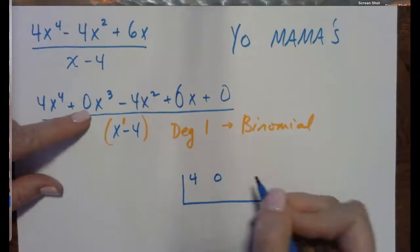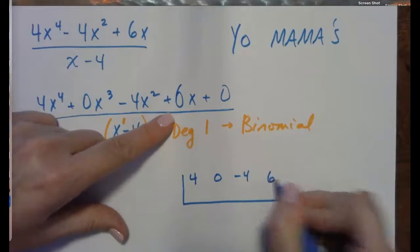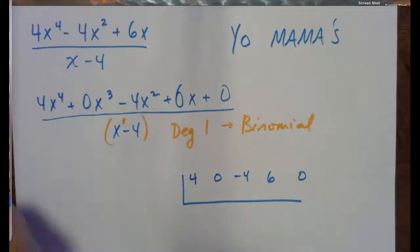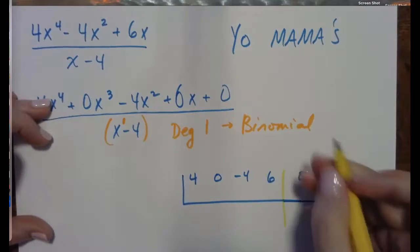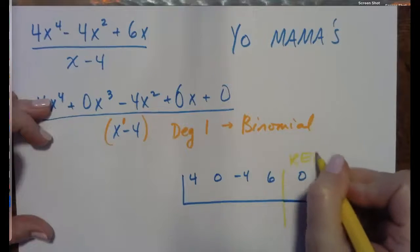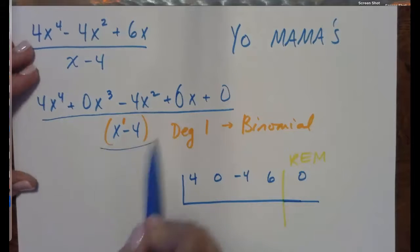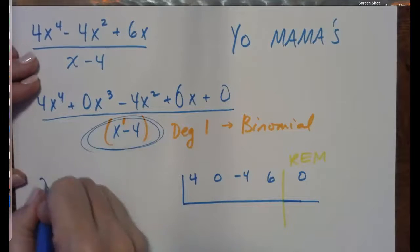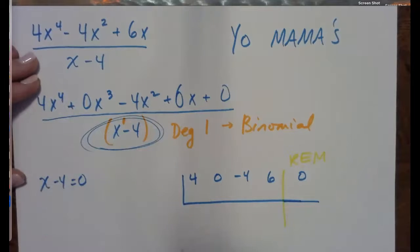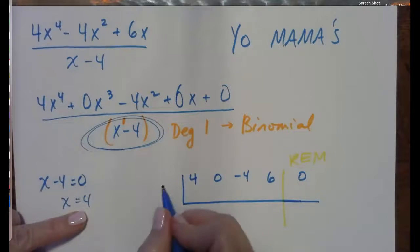And each one of those coefficients will be represented. 4, 0, negative 4, 6, and 0. And this last column is always going to be the remainder. So that guy is the remainder right over there. So here's the deal. We're going to take our divisor, set it equal to 0, and we get x equals 4. So this is the factor that we are going to divide by, positive 4.